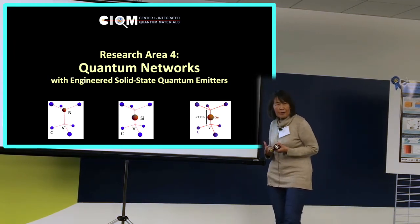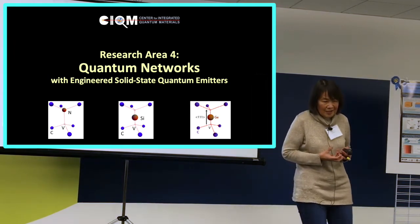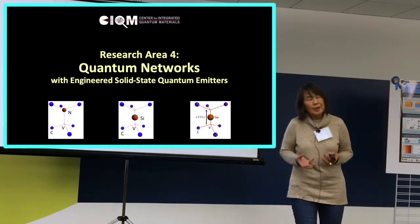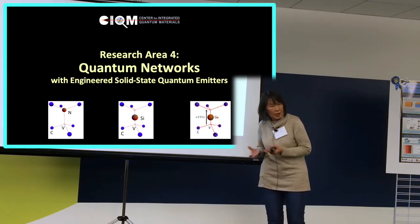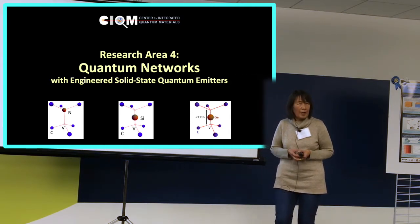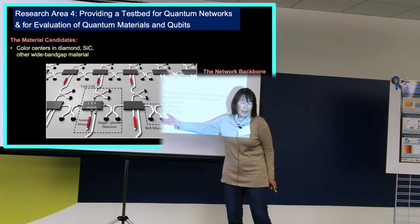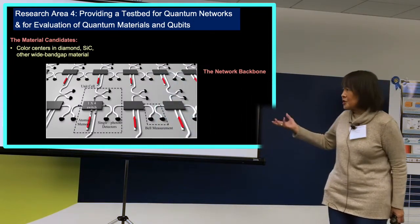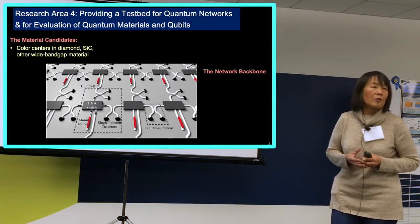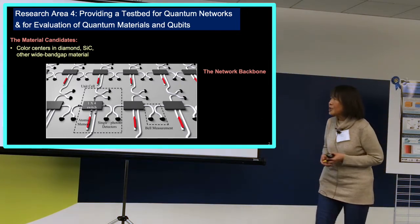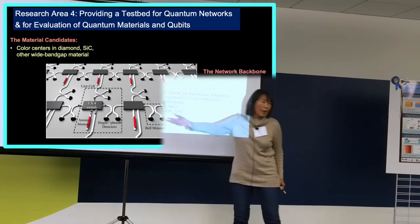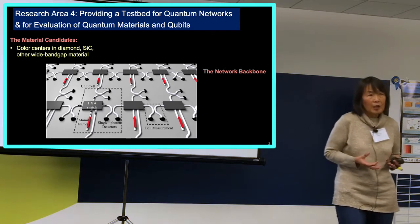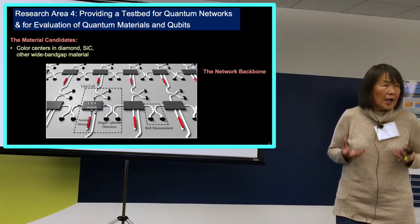Because of the inherent integrability of those kinds of color centers and their quantum mechanical behavior into a larger platform that allowed the transport of those signals over distances that constitutes a network, it became natural for Research Area 4 to expand into a broader area, to form the backbone, the network, the connections between the qubits.